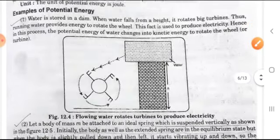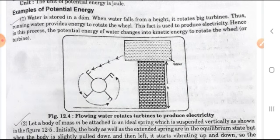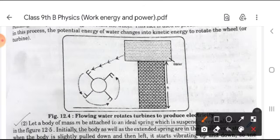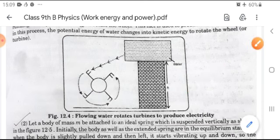Now some examples of potential energy are given in the picture. The first example is the rotating turbine using the potential energy of water. Nowadays, electricity is produced at the electrical power plant by using a dam. The dam has a lot of water that has potential energy, and it is used to run the turbine, and by using the turbine we can generate electricity — electrical energy.